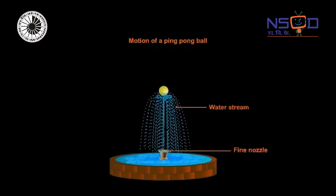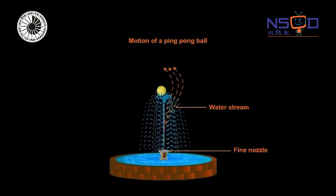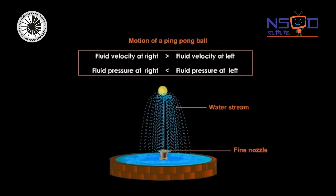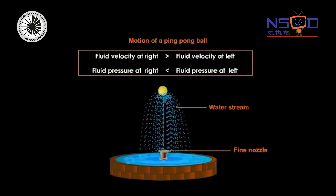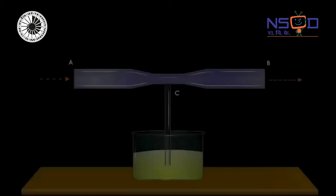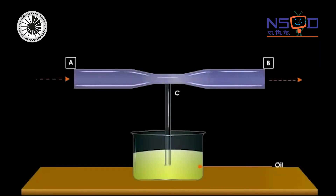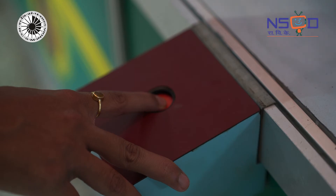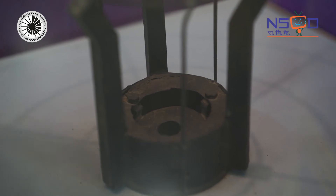Bernoulli's principle tells us that when a jet of fluid flows with great speed, its pressure decreases. Fast moving air exerts lesser pressure on an object as it moves past it. That's why the fast moving air jet moving past the sides of the ball creates a low pressure zone around the ball.